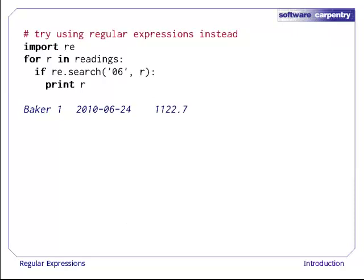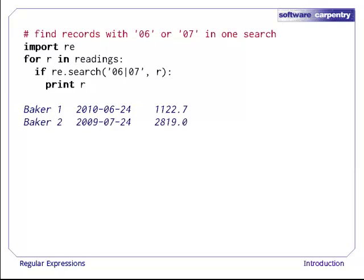Let's try using a regular expression to do our matches instead of the simple string in operator. We import the regular expressions library and then say, for each record, if regular expressions search can find a match for the string 06 in the record, then we'll print it out. So far, this is matching exactly what 06 in R would match. It's not much of an improvement. But look what happens if we want to match a month of 06 or a month of 07. We can combine the two in a single pattern.